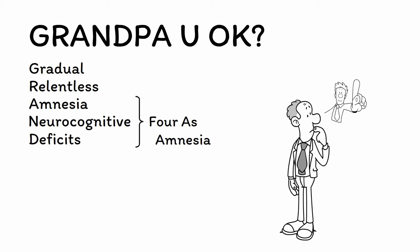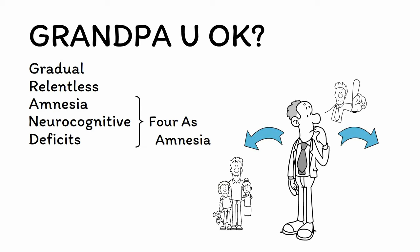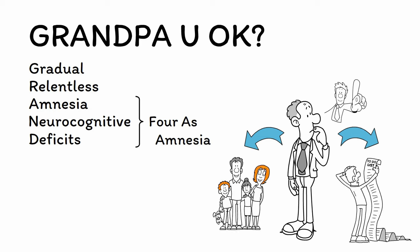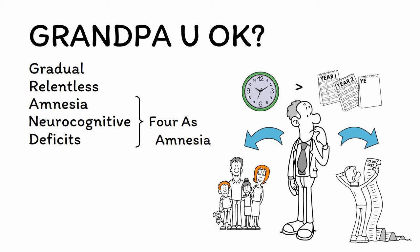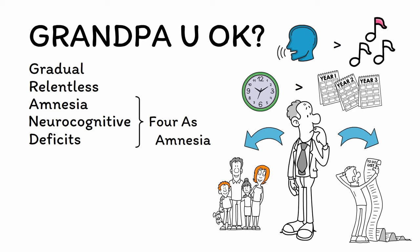Both retrograde and anterograde amnesia are seen, with patients having difficulty with both retrieving old memories and encoding new ones. Short-term memory — involving things that happened within the past several hours or days, like what you ate for dinner last night — is affected earlier and more severely than long-term memory, such as where you grew up or went to school. Explicit or declarative memory is affected more often than implicit or non-declarative memory, though these distinctions tend to break down as the disease progresses, with all forms of memory generally being impacted in later stages.